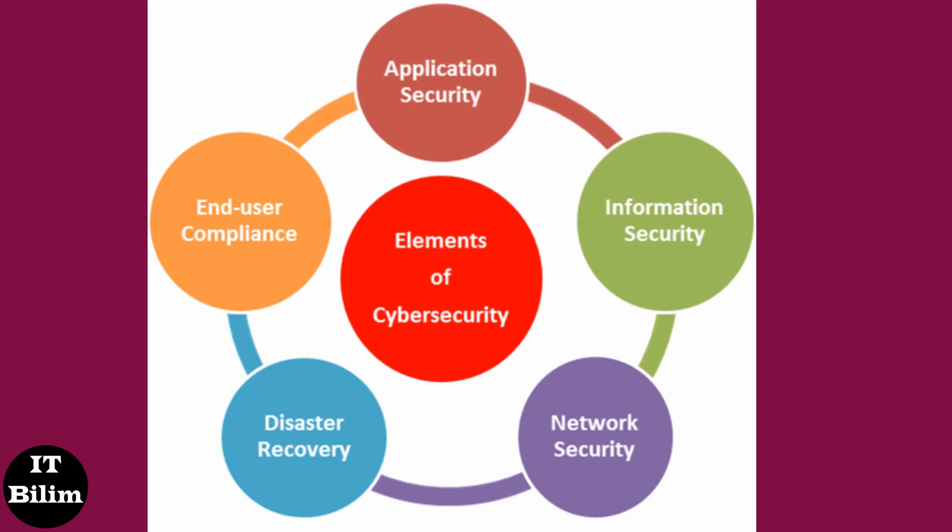Network security: actions to protect computer networks from various threats such as targeted attacks or malware. Application security: protecting devices from threats that criminals can hide in programs. An infected application can give an attacker access to data it is supposed to protect; application security is ensured even at the development stage. Information security: ensuring the integrity and privacy of data both during storage and during transmission. Operational security: information asset handling and protection, including managing network access permissions and rules that define where and how data can be stored and transmitted.